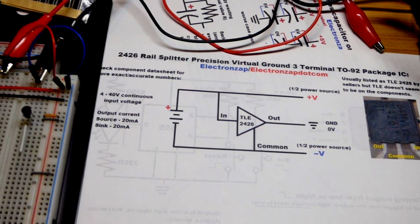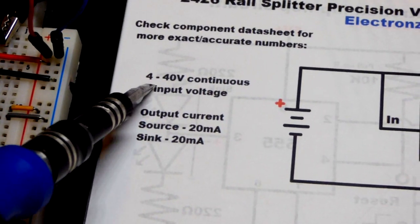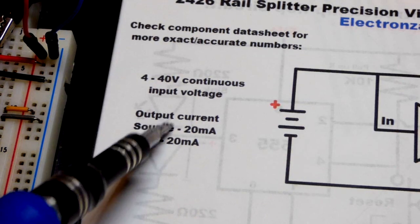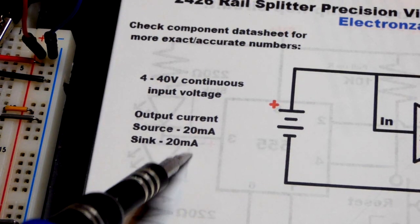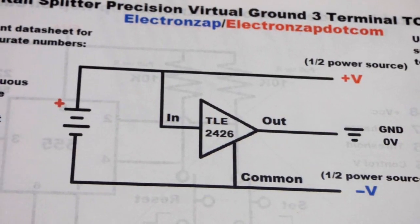In this video we'll be using 30 volts, but this component is good for, according to the data sheet I read, 4 to 40 volts. The output can sink or source 20 milliamps of current, and this is the basic layout right there.